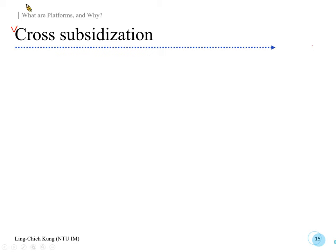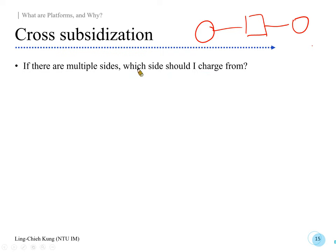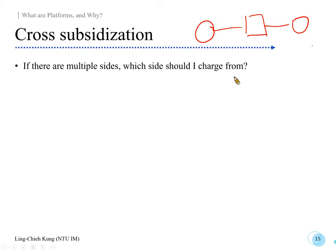The next topic is cross-subsidization. Suppose you have a platform with multiple sides — which side should you charge from? That's the cross-subsidization problem. Or, put differently, which side should be your major revenue source? You may benefit from all sides, but typically you want to identify which side should be the primary revenue source.